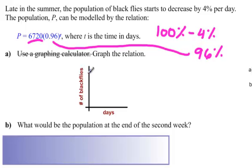So, we're starting with 6720, and it's a decay question. So, it's going to go like this. There's our graph. 6720 is our starting point. Black flies are not fun. I've tree planted, and they ate me alive, practically. So, it says down here, what would be the population at the end of the second week?